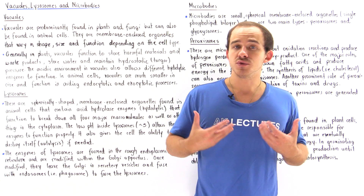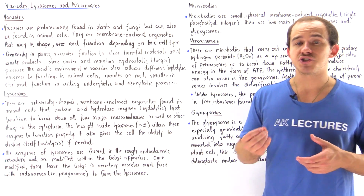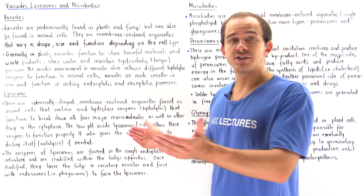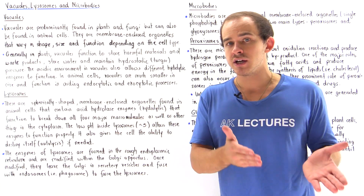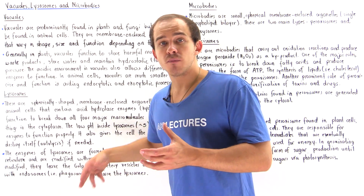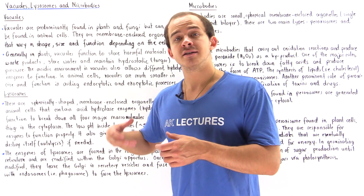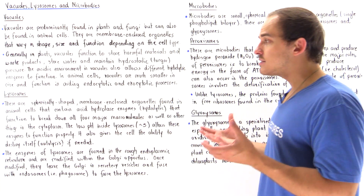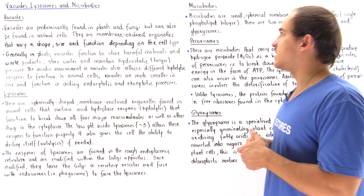Inside our immune system, we have cells known as phagocytes, which undergo a process called phagocytosis — engulfing things like bacteria. Lysosomes can fuse with the phagosome containing a bacterial cell and destroy it. This shows how lysosomes can be very important inside animal cells.